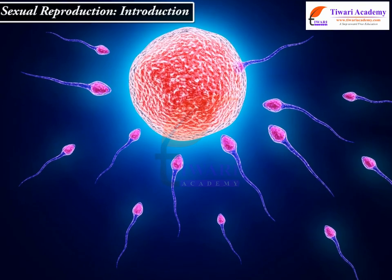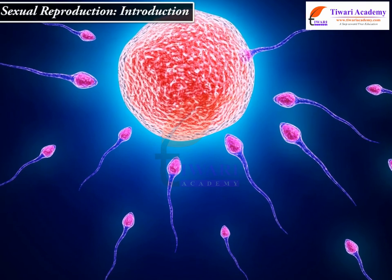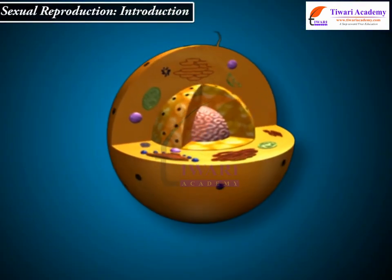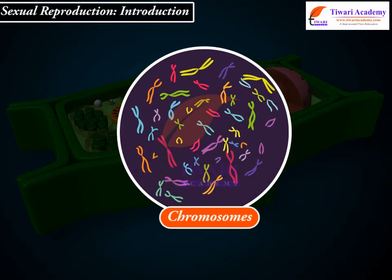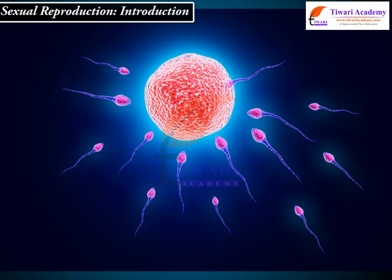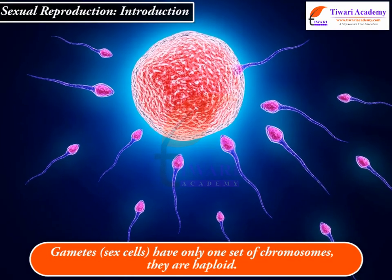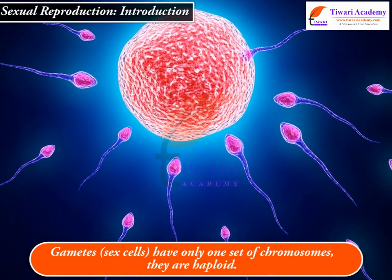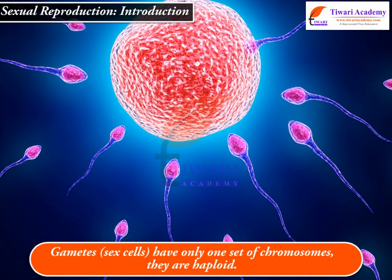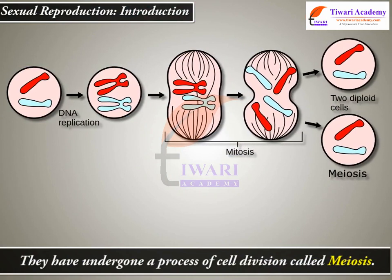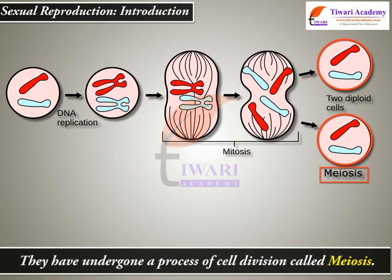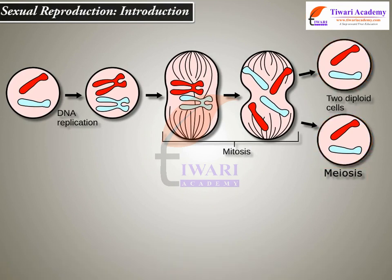Gametes vary in shapes and sizes in different animals. The cells of an animal or higher plant have two sets of chromosomes — they are diploid. When gametes or sex cells are produced, they have only one set of chromosomes — they are haploid, having undergone a process of cell division called meiosis. During meiosis, crossing over occurs, which makes it possible to get recombination.